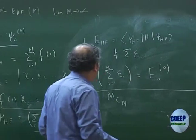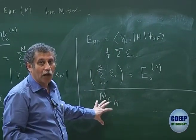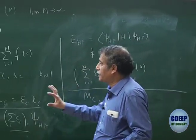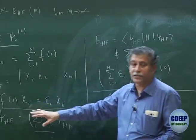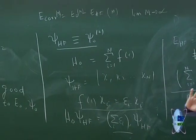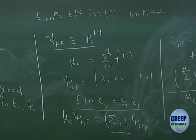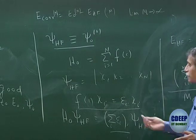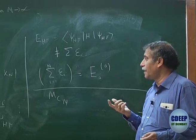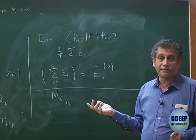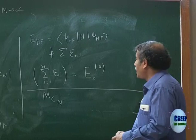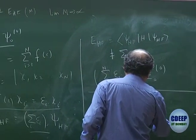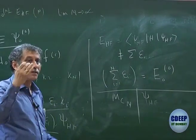So it is important to realize that everything we have been talking about is in a finite basis. With this finite basis, we have a finite number of solutions of H₀, which are all MCN determinants. All MCN determinants are solutions because they contain spin orbitals which are eigenfunctions of the Fock operator, and H₀ is the sum of the Fock operator. One of the determinants is ψ_HF.